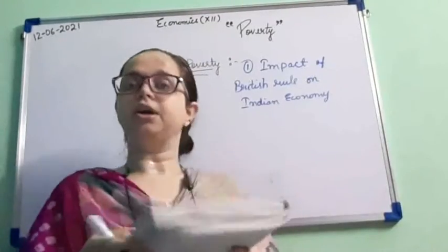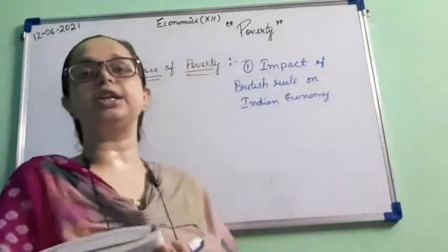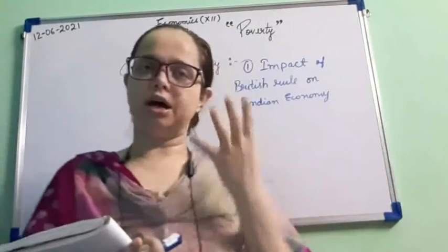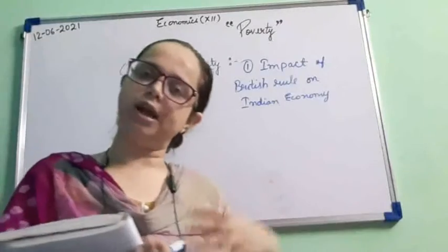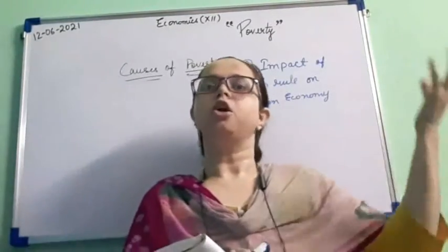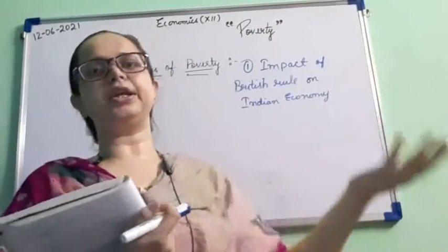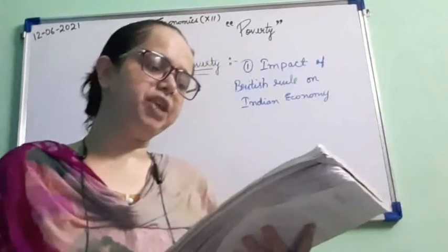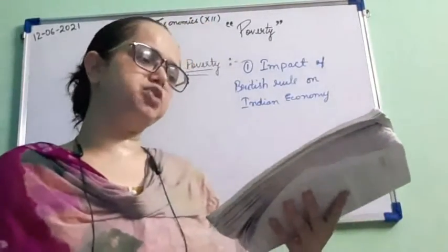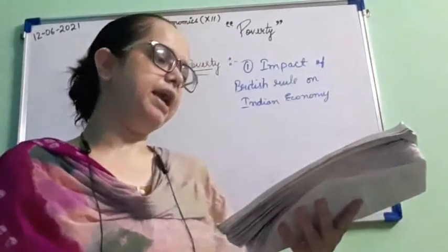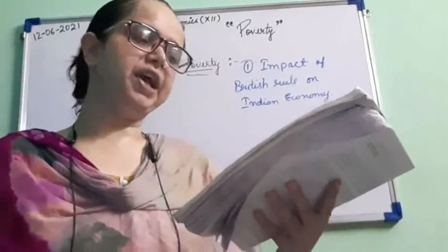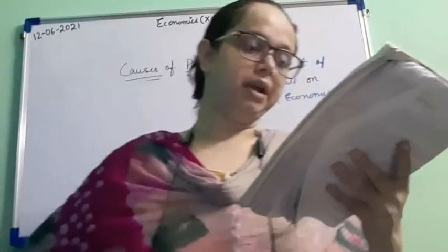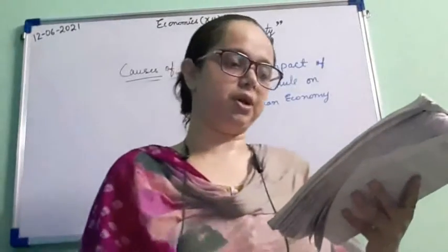The policy of de-industrialization made India an exporter of raw materials and an importer of finished goods. This left India in poverty as our natural resources were plundered — meaning robbed and stolen. The Britishers took our raw materials, prepared finished goods there, and sold them back in our country.